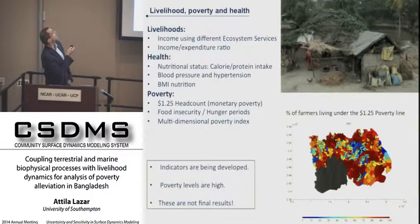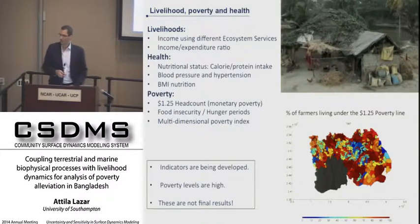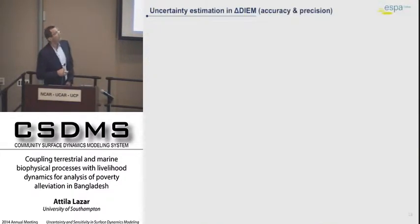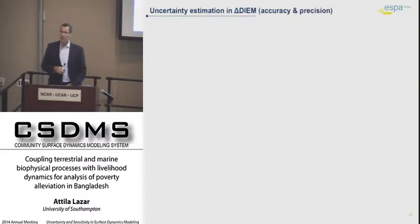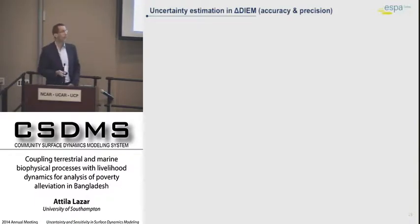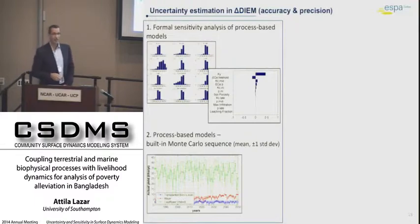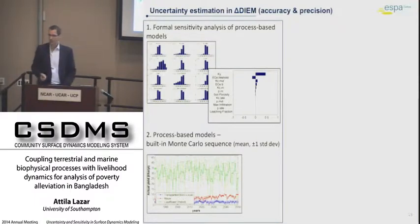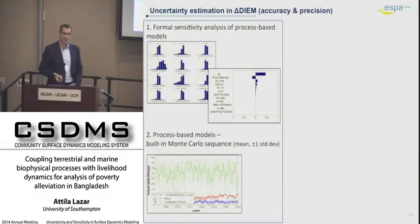There are also other indicators that we are thinking of — some of them are just empirical relationships developed based on primary data collected in the field. Uncertainty is a big headache for how we are going to do formal uncertainty analysis of the model. My simple plan so far is that we do a formal uncertainty analysis on each of the process-based models, creating tornado charts if they don't already exist.